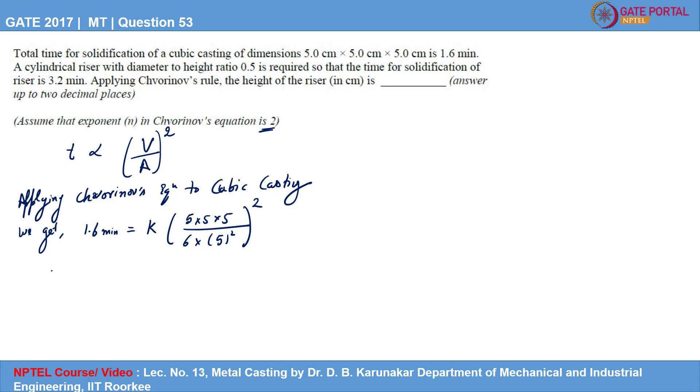So from this equation we can deduce the value of K. That will be nothing but 1.6 divided by, since 2.5 will be taken care of this way, so it will be 25.36. So it will come out to be 2.306 minutes per centimeter square.